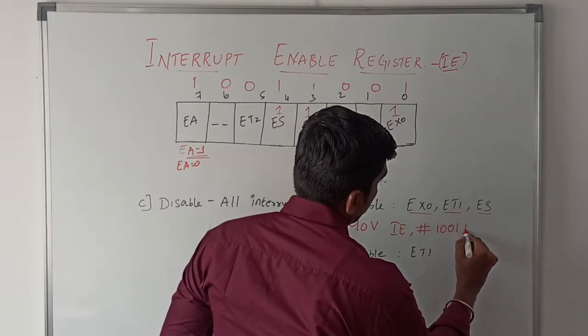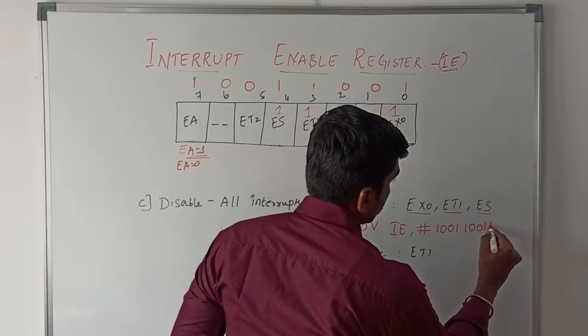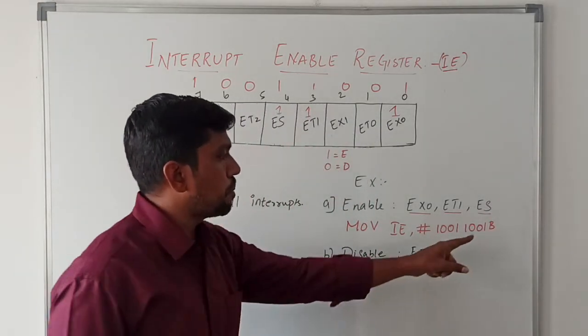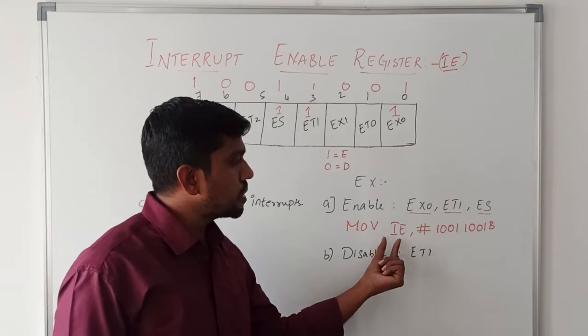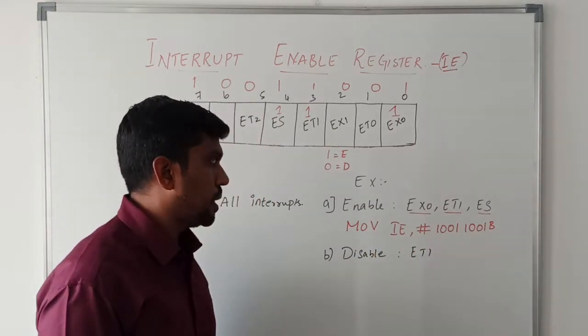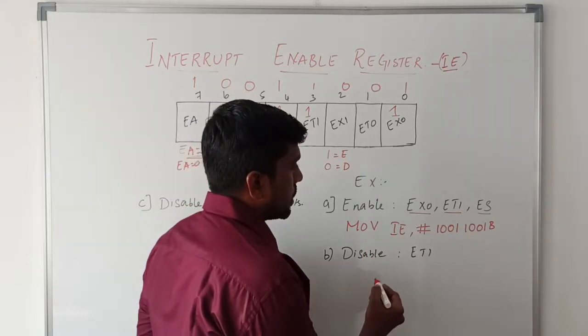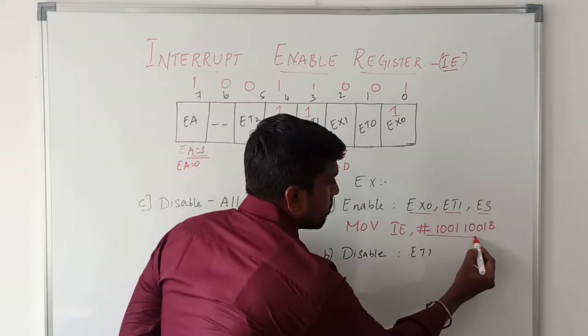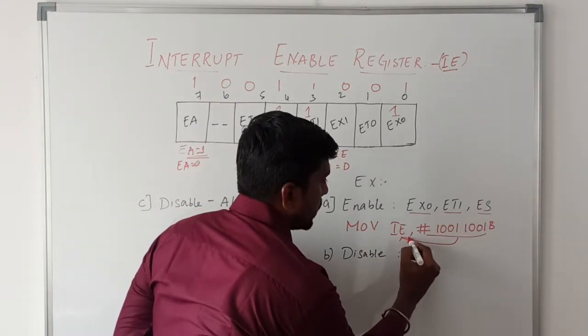10011001B. This B represents binary. In this instruction I am passing the immediate value in bit values, not hexadecimal values. After execution of this instruction, this immediate value is transferred to IE register.